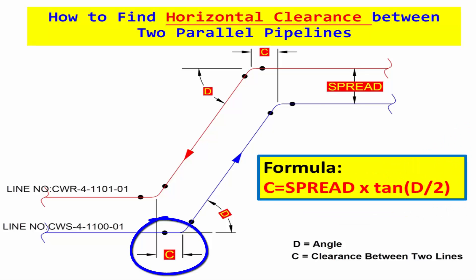Formula to find C: spread multiplied by tangent of degree of rolled elbow divided by two.